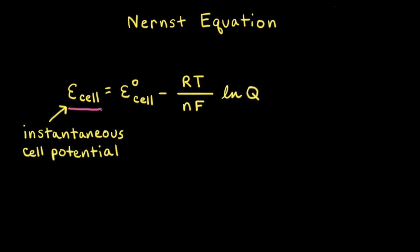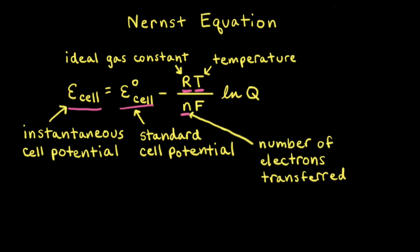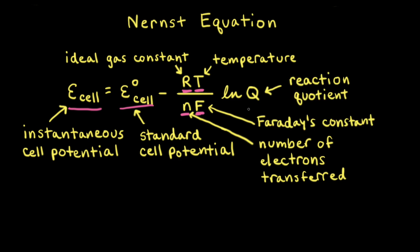E cell is the instantaneous cell potential — the cell potential or voltage at a specific moment in time. E naught of the cell is the standard cell potential, which is the cell potential when the reactants and products are in their standard states. R is the ideal gas constant, T is the temperature, N is the number of electrons transferred in the redox reaction, F is Faraday's constant, and Q is the reaction quotient.